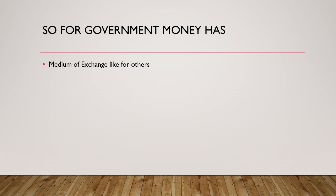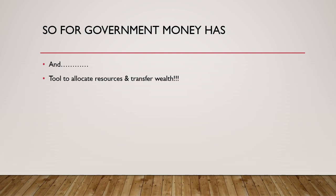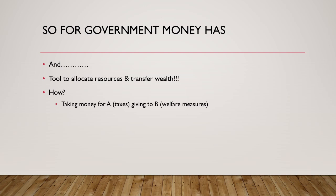Like us, money is a medium of exchange for the government — it buys goods and services through money. But unlike us, for the government money is a tool to allocate resources and transfer wealth. The government can take money from person A in the form of taxes and give it to person B as welfare, or it can increase the fiscal deficit, print money, and give it to person B in the form of handouts or spending on health, thus transferring wealth.